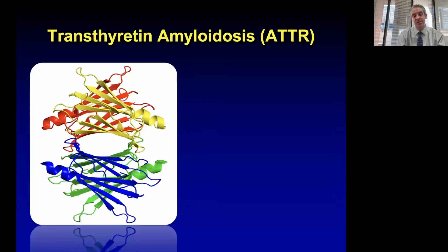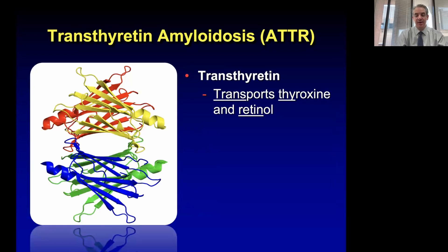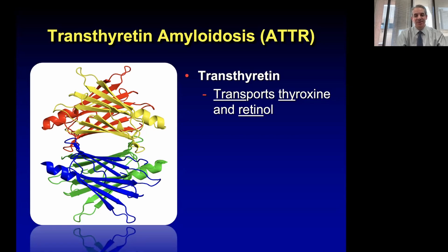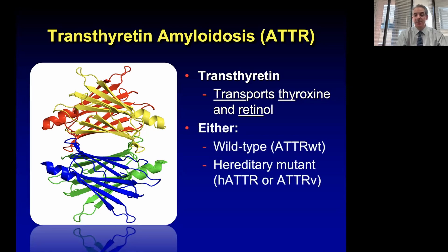Now let's pivot to ATTR. This ribbon diagram shows what TTR looks like circulating in the blood. TTR is a blood protein made in the liver — about 99% of TTR in the body is made in the liver, and about half to 1% is made in the choroid plexus of the brain. The word transthyretin is a portmanteau meaning it transports thyroxin — thyroid hormone — and retinol, by complexing with retinol binding protein four. It's really not critical for thyroid hormone delivery, but is important for vitamin A transport throughout the blood. ATTR comes in two flavors: an acquired or wild-type form, and a hereditary or variant form, also called ATTRV.